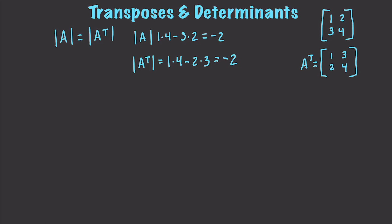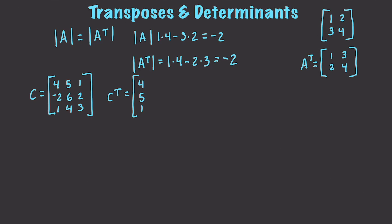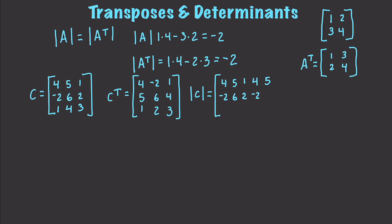Let's use a more complex matrix. So let's say we have a matrix C. We're going to be using a lot of the techniques we have covered in the previous tutorial. What would be the transpose of this? Well, it would be 4, 5, and 1 — take that row and just make it a column — then negative 2, 6, and 2, then 1, 4, and 3. If we go and get the determinant of our original C, we're going to use the rule of Sarrus, which I covered previously. This makes it easy to get our determinant for this 3 by 3 matrix. I'm just taking the 4 and 5 and adding it to the end of the original matrix to apply the rule of Sarrus — that is going to give us our determinant.